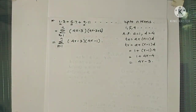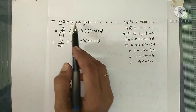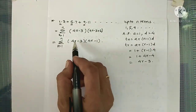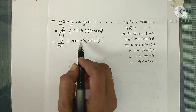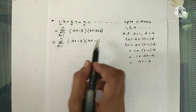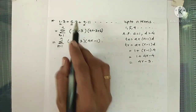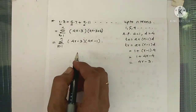Let's verify. Putting r=2: 4×2−3 = 5, and 4×2−1 = 7. So we get 5×7, which is the correct second term. Always find the rth term and verify it.